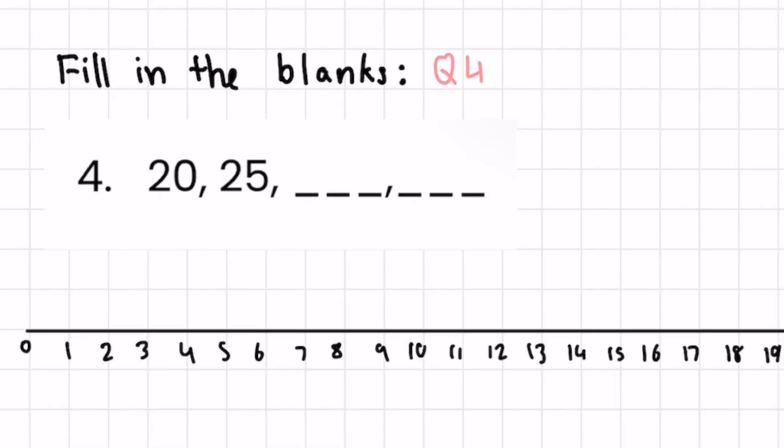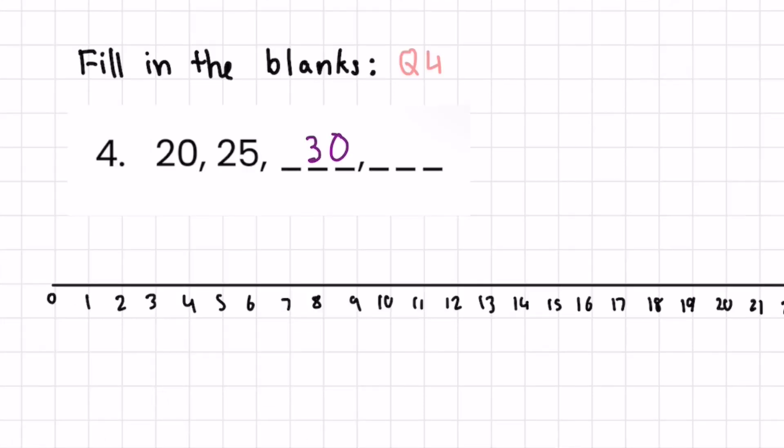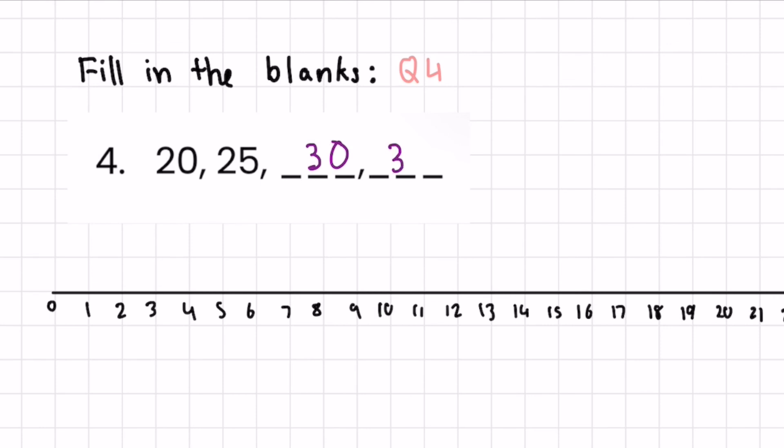For question four, we start at twenty-five. Let's go five ahead, which leaves us at thirty. Now, from thirty, let's go five ahead. This leaves us at thirty-five. The final answer is twenty, twenty-five, thirty, thirty-five.